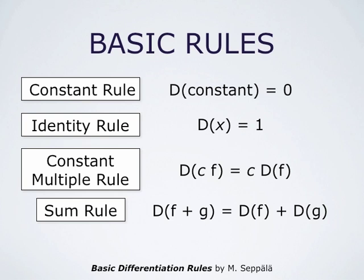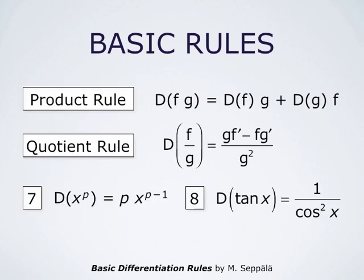The sum rule says that the derivative of a sum is the sum of derivatives. The product rule says that the derivative of a product is the derivative of the first factor times the second factor, plus the derivative of the second factor times the first factor. The quotient rule says that the derivative of a quotient is the denominator times the derivative of the numerator minus the numerator times the derivative of the denominator, all divided by the denominator squared.